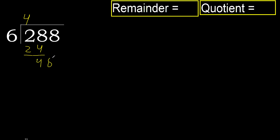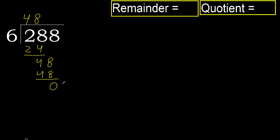Next, bring down the next digit to get 48. 6 multiplied by 9 is greater. 6 multiplied by 8 is 48, which is not greater. Subtract — remainder is 0. That's the last digit, so we finish.